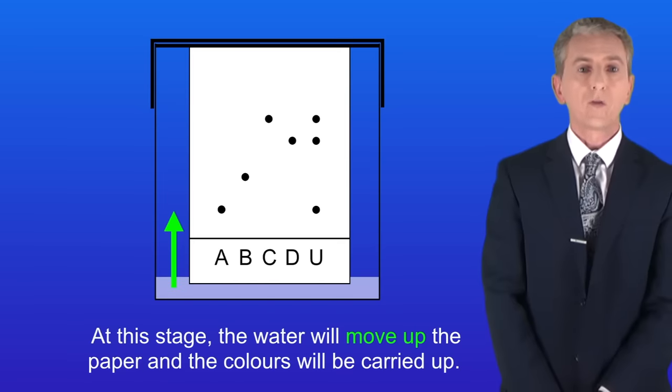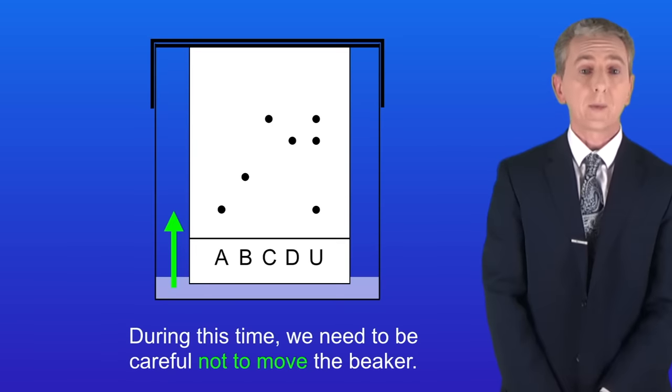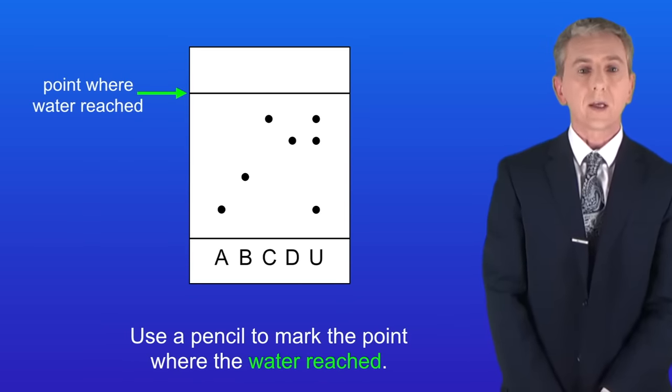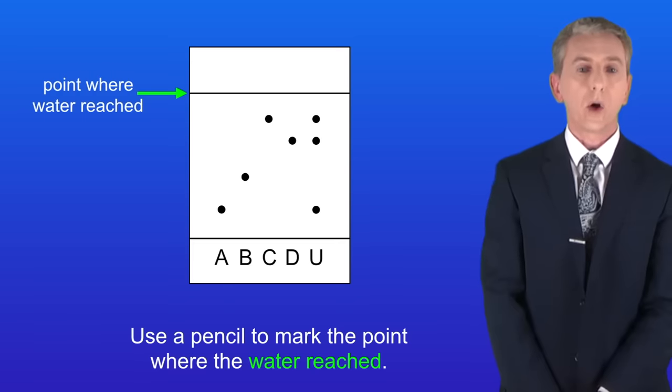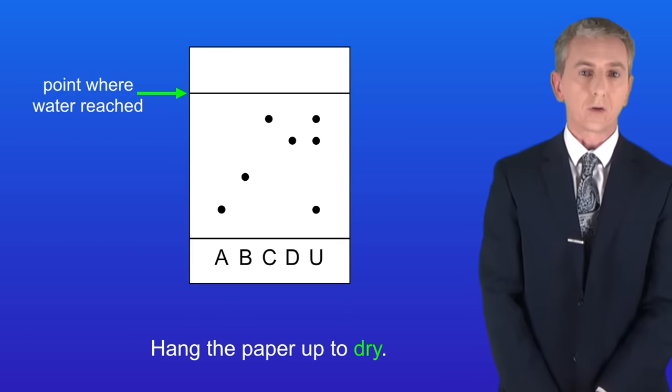Now at this stage the water will move up the paper and the colors will be carried up. During this time we need to be careful not to move the beaker. We remove the paper when the water has traveled around three quarters up. At this stage we use a pencil to mark the point where the water reached. And finally we hang the paper up to dry.